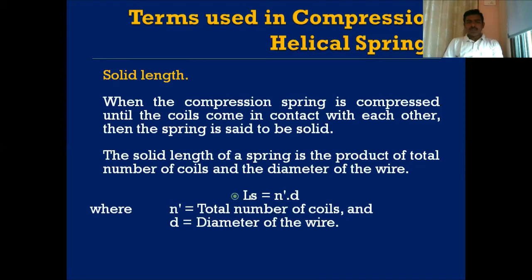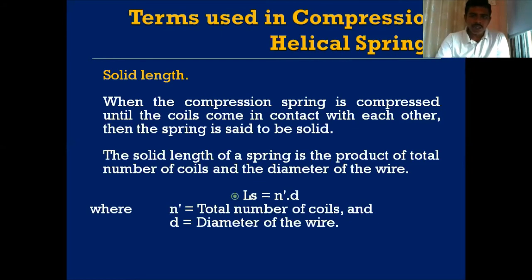The solid length of the spring can be expressed mathematically as: Ls = n' × d, where n' is the total number of coils and d is the diameter of the wire. The helical spring is made from a wire of circular cross-section wound in the form of a helix, so the solid length is simply the product of the number of coils and the wire diameter.